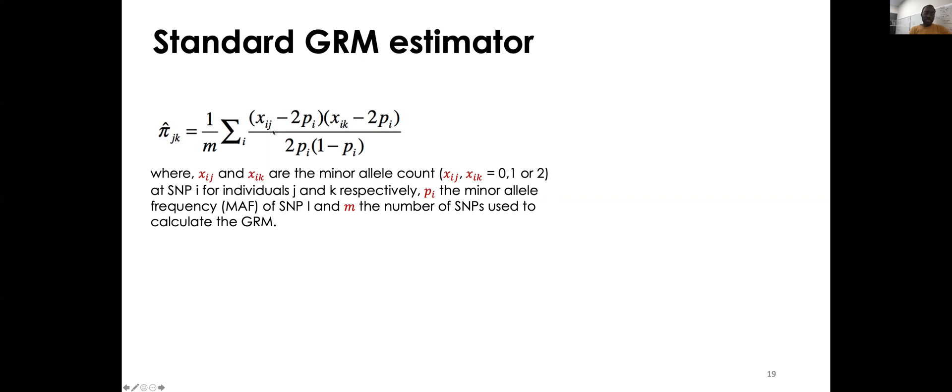And those quantities are essentially looking at minor allele counts for individual j. So this is something that takes value zero, one or two, depending on whether you have zero copies of the minor allele, one copy of the minor allele or two copies of the minor allele. And so same for x_ik for individual k. And those terms here are essentially looking at the correlation, what is the degree of sharing between individual j and individual k at that particular SNP. So we calculate that for all the SNPs, and then we average across all the SNPs we have at our disposal.